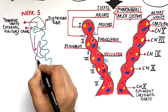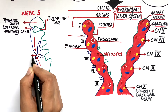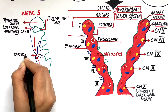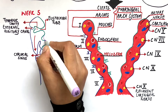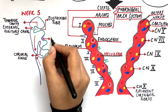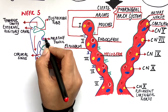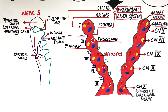The second, third and fourth grooves are obliterated by the overgrowth of the second arch. This area will eventually become the future cervical sinus. The second pouch is also obliterated by the development of the palatine tonsil, but a part of it remains as the tonsillar fossa.